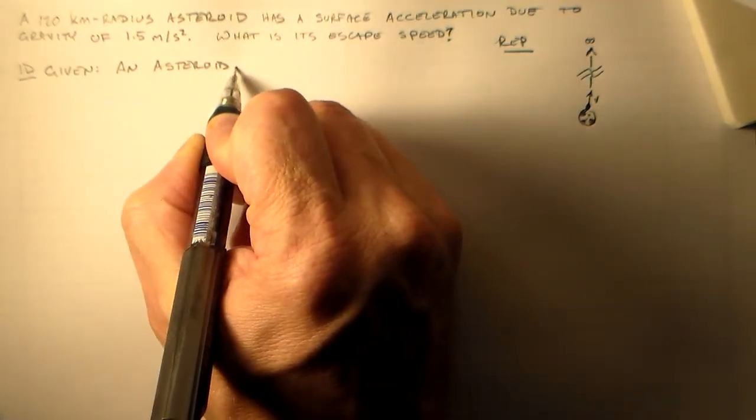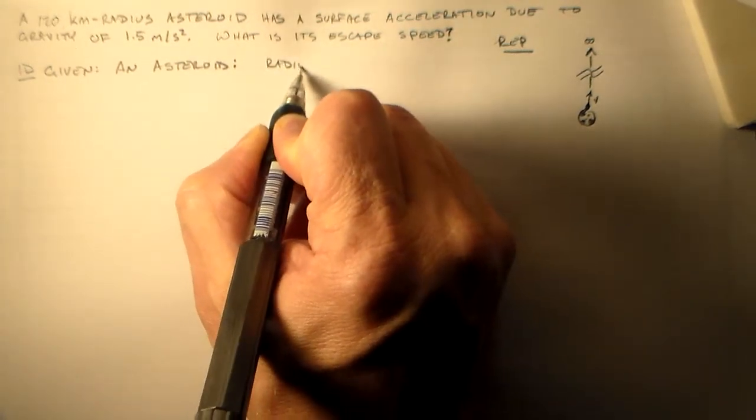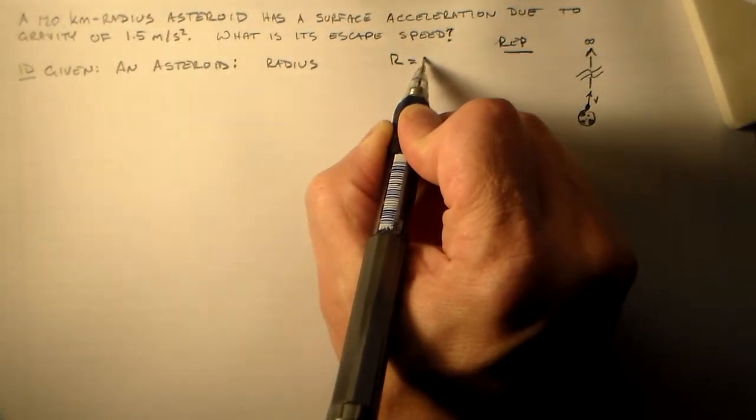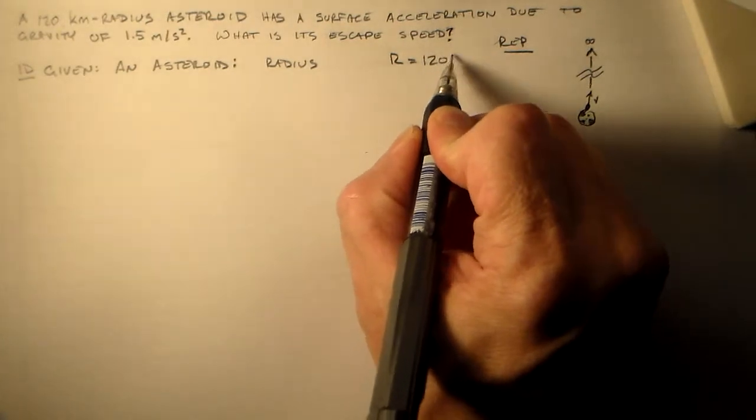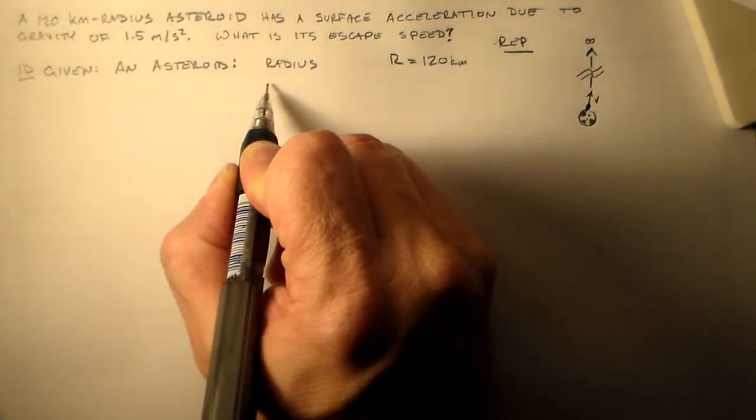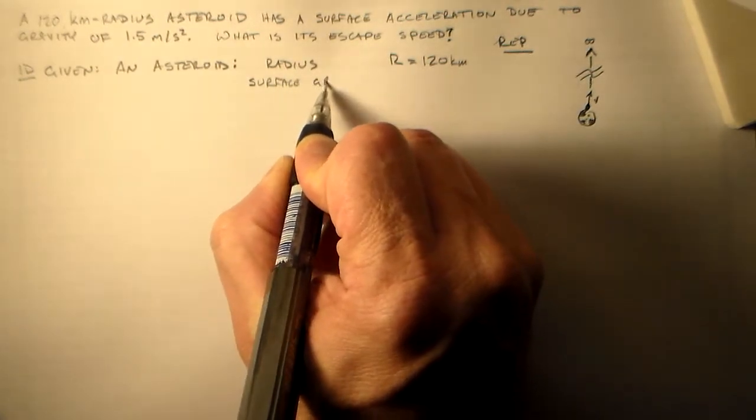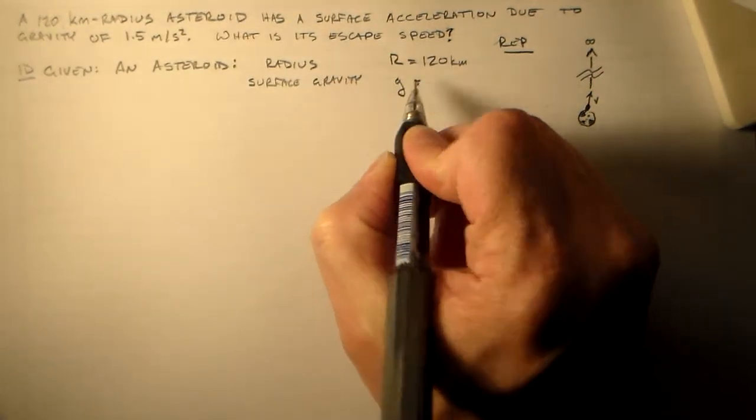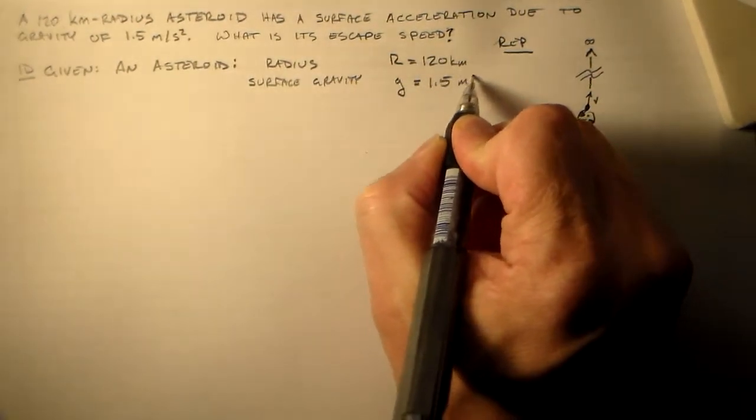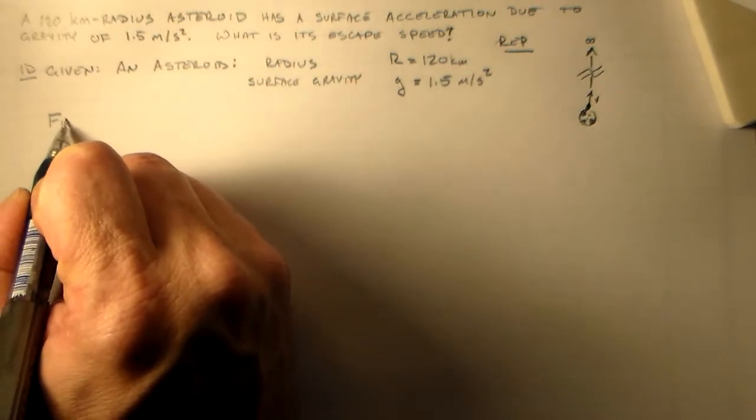So I'm given an asteroid. And all I know about it is its radius. I'll call that big R equals 120 kilometers. And surface gravity. I'll call that g. That's 1.5 meters per second squared. Okay. And that's all I really know. And with that, I should be able to find the escape speed.